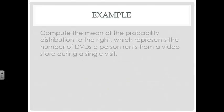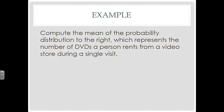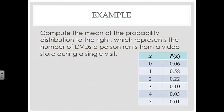Let's take a look at an example. Compute the mean of the probability distribution to the right, which represents the number of DVDs a person rents from a video store during a single visit. Here's our probability distribution. If they rent 0 videos, if they go into the store and they don't rent any videos, there's a probability that's about a 6% chance. The chance of them going in and renting 1 is about 58%. Renting 2, 22%, 3 is 10%, 4 is 3%, and 5 is only 1%.